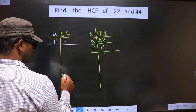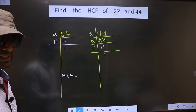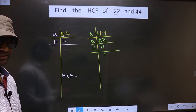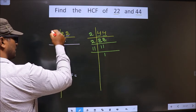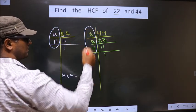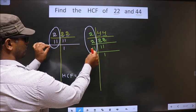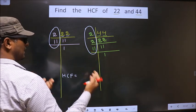So now our HCF is the product of numbers that are present here and also here. Now we should find the numbers that are present in these two places. So let us find.